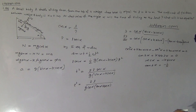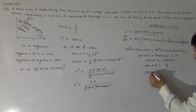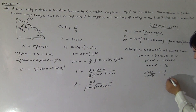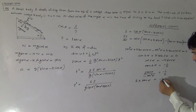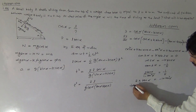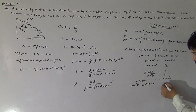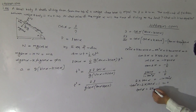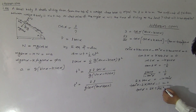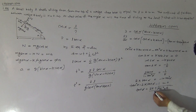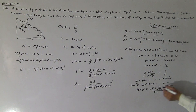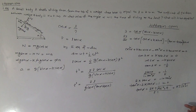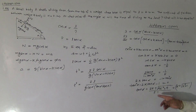Solving the quadratic in tan alpha using the quadratic formula: tan alpha equals K plus or minus root(K squared plus 1). Since alpha must be less than 90 degrees, the negative root is not physical and is omitted. Therefore the value of tan alpha for least time is tan alpha equals K plus root(K squared plus 1).